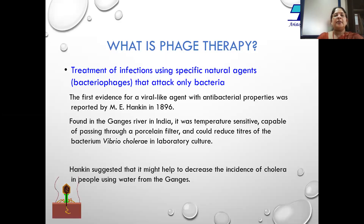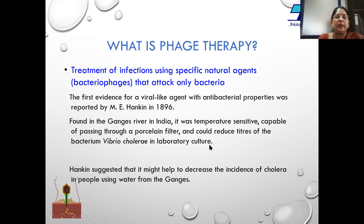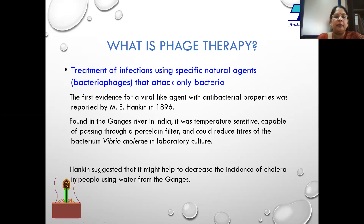The use of bacteriophage for control of bacterial infection is called phage therapy. The first evidence of phage therapy was recorded in the year 1896, when it was found that during a Vibrio cholerae epidemic, people who were using water from the Ganges were not affected by the epidemic.